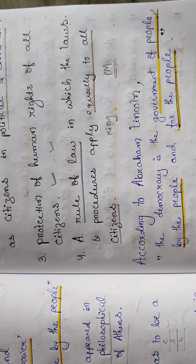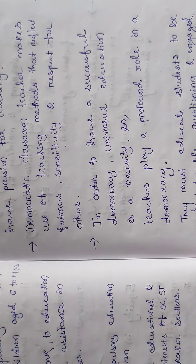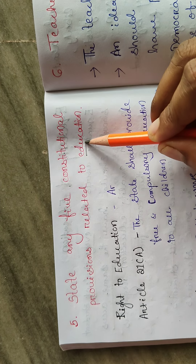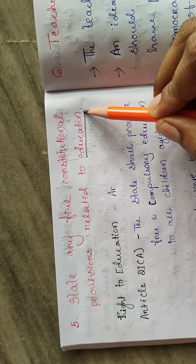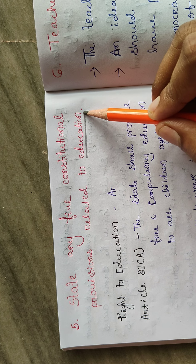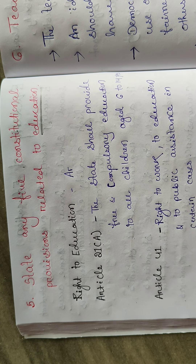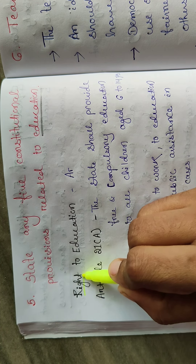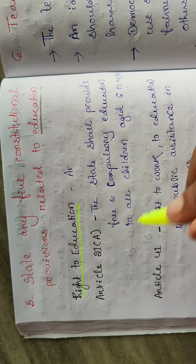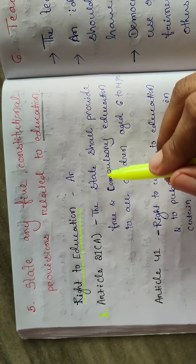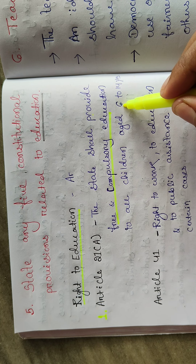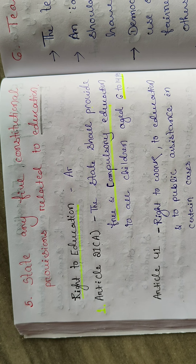Question Number 4: State any five constitutional provisions related to education. The first one is the Right to Education under Article 21A. Article 21A states that the state shall provide free and compulsory education to all children of age 6 to 14 years.